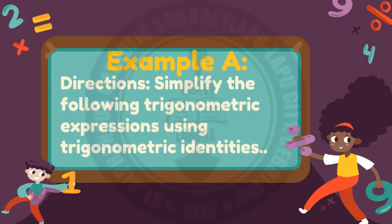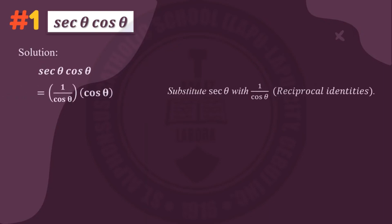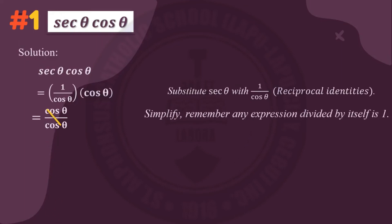Example A. Simplify the following trigonometric expressions using trigonometric identities. Number one: secant theta times cosine theta. For our solution, we substitute secant theta with 1 over cosine theta using one of the reciprocal identities. After that, we multiply 1 over cosine theta with cosine theta, giving us cosine theta over cosine theta. We cancel out, and since any expression divided by itself equals one, secant theta times cosine theta is equal to one.